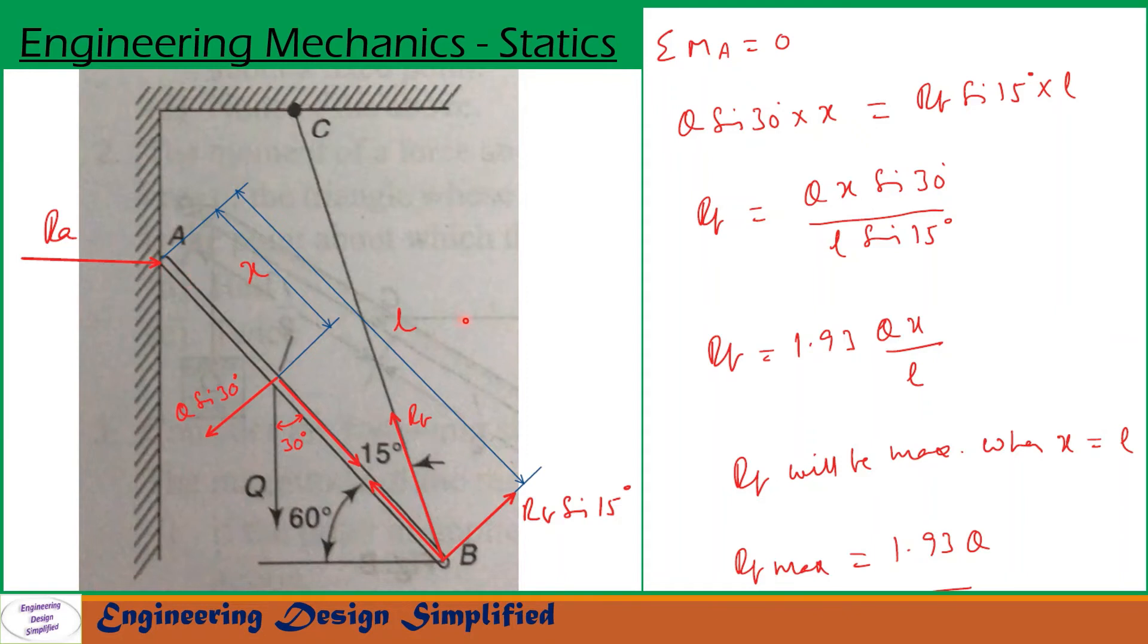Now let us take moments about A. So moments about A we have sigma MA equal to 0 and the component of Q along bar AB similarly the component of RB along bar AB will not produce any moments about A. So only these two forces Q sin 30 and RB sin 15 will produce moments about A. So let us see that sigma MA equal to 0.